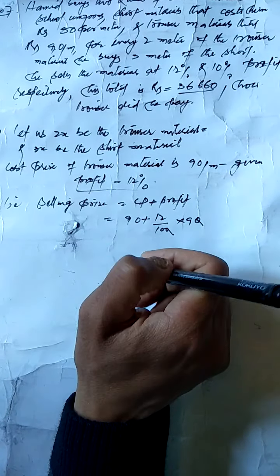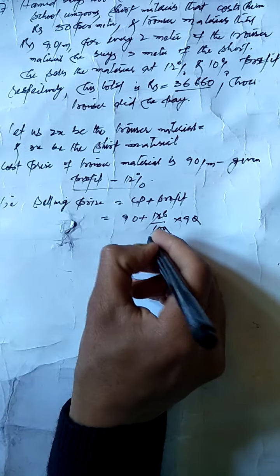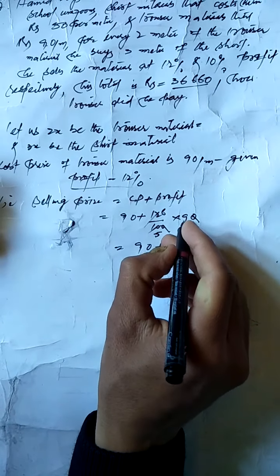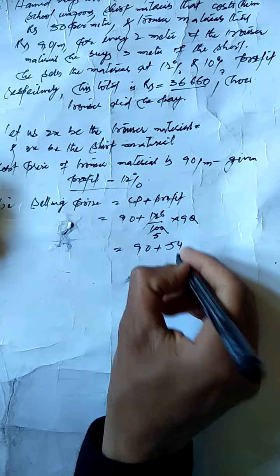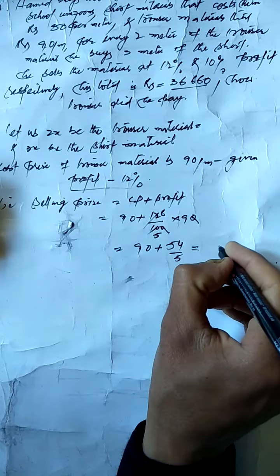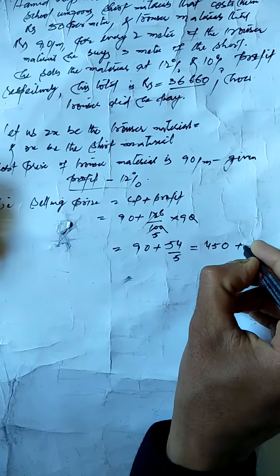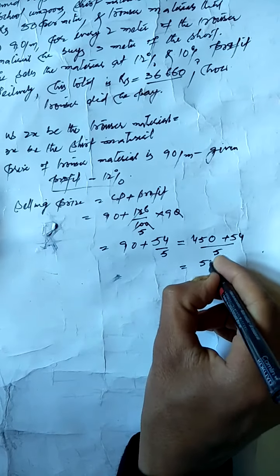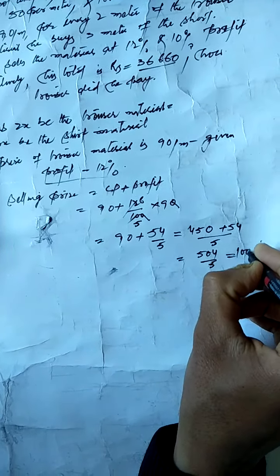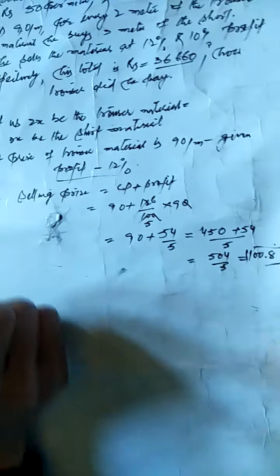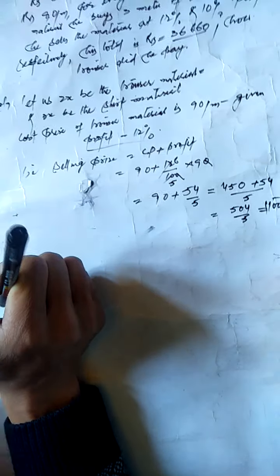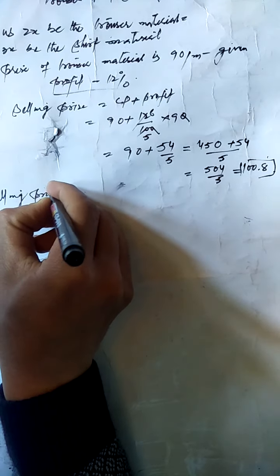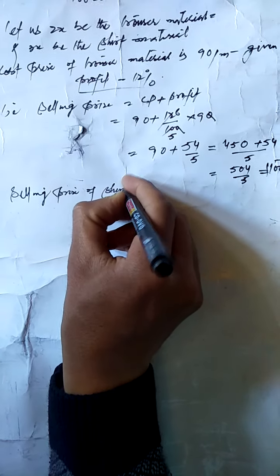Calculating: 12 divided by 100 into 90 gives 54 divided by 5, which equals 10.8. So selling price of trouser material equals 90 plus 10.8, which equals 100.8 per meter.